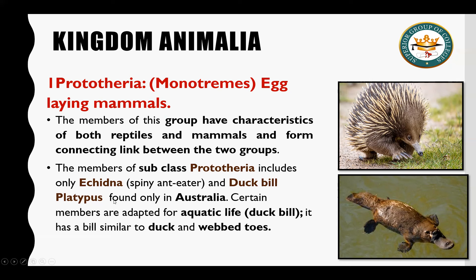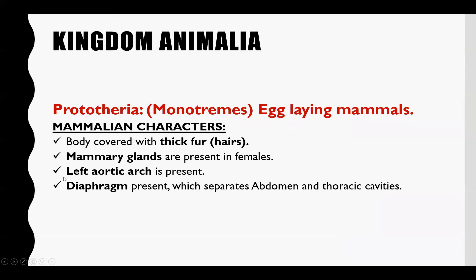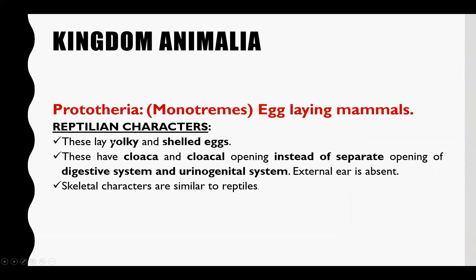یہ Australia کے اندر پائے جاتے ہیں اور پانی میں بھی time گزارتے ہیں۔ Duck-billed platypus duck کی shape کا ہوتا ہے، اس کے toes webbed ہوتے ہیں اور duck کی طرح کی beak ہوتی ہے، لیکن یہ mammal ہے۔ ان کی body thick fur سے cover ہوتی ہے، mammary glands اور left aortic arch موجود ہوتی ہے، اور diaphragm بھی موجود ہوتا ہے۔ Reptilian characters میں یہ yolk shell eggs lay کرتے ہیں اور cloaca موجود ہوتی ہے جو common opening ہے urinary، reproductive، اور digestive system کے لیے — separate openings موجود نہیں ہوتیں۔ Skeletal features بھی کافی حد تک reptiles سے ملتے ہیں۔